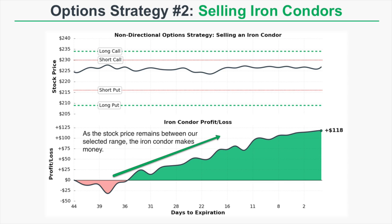On the top part of the graph we can see the stock price clearly remains between our short put and short call strike prices as time passes. All of the options in this iron condor are going to decay as time passes. Since we sold this iron condor, we want these option prices to decrease. When they decrease from the price we sold them at, we start to see profits as iron condor sellers.